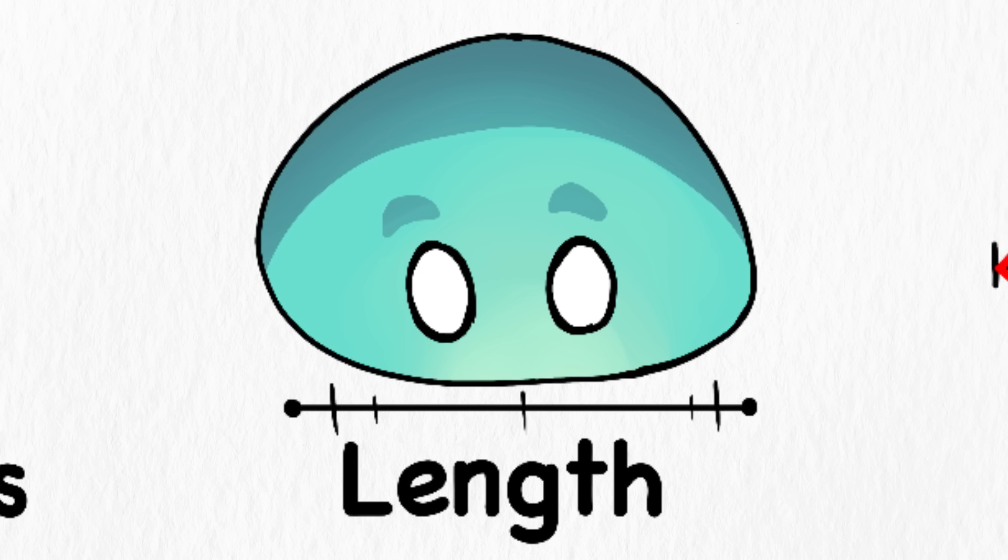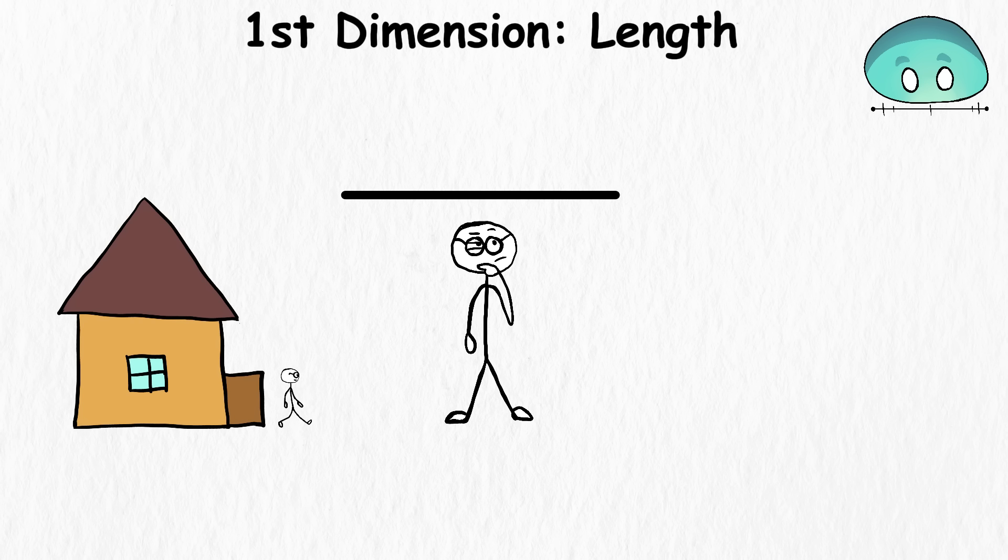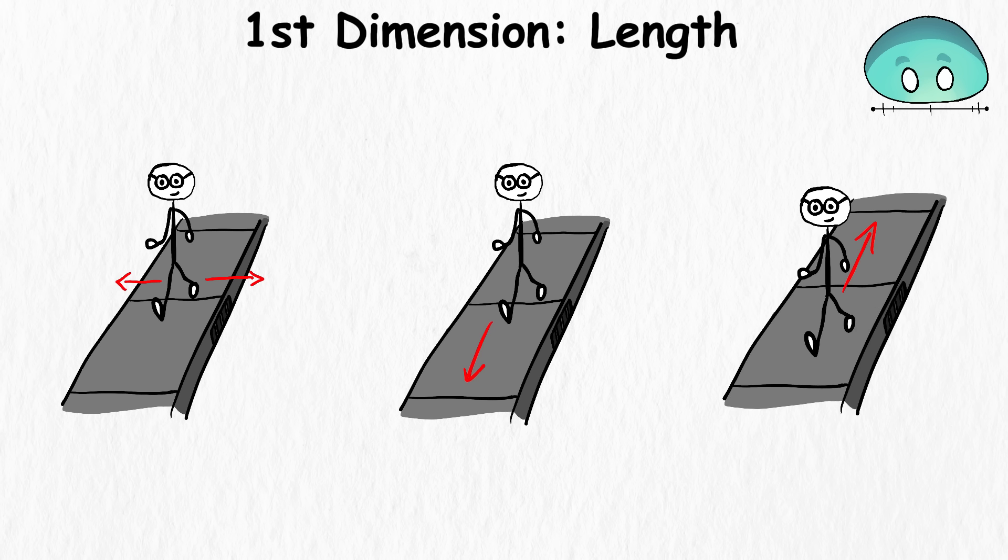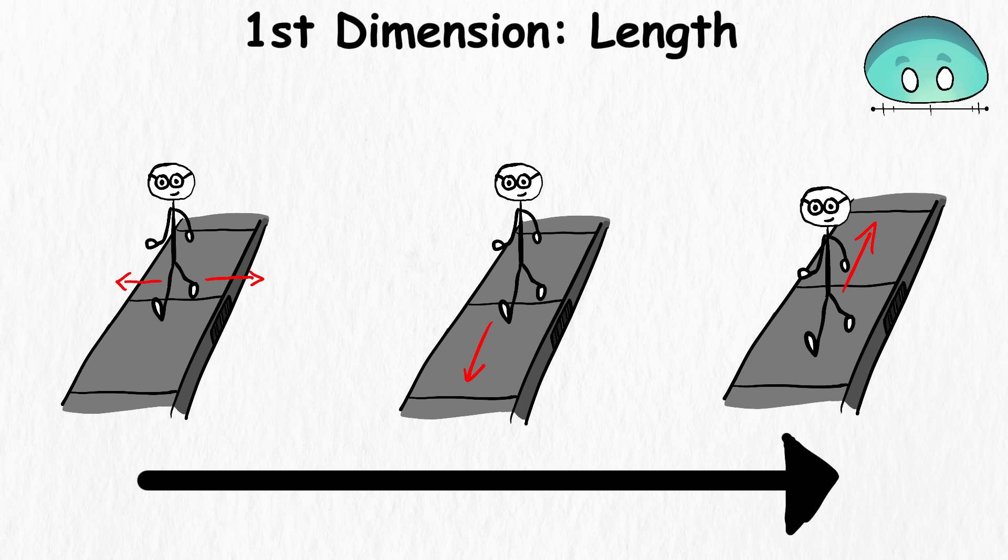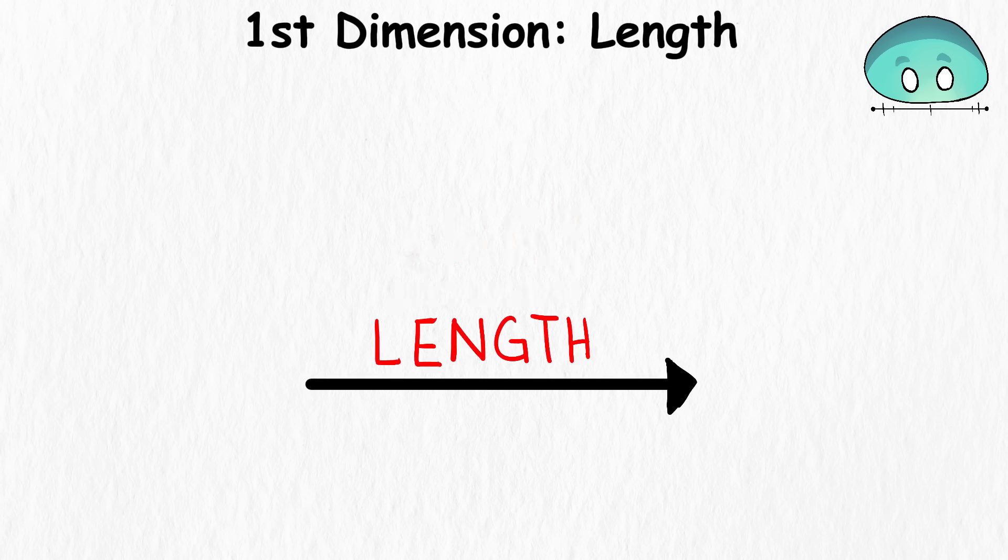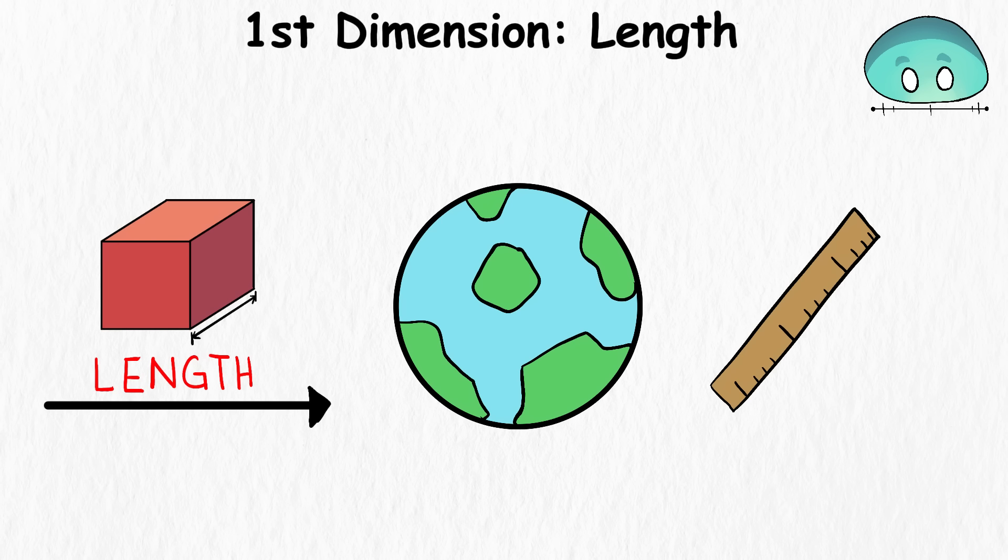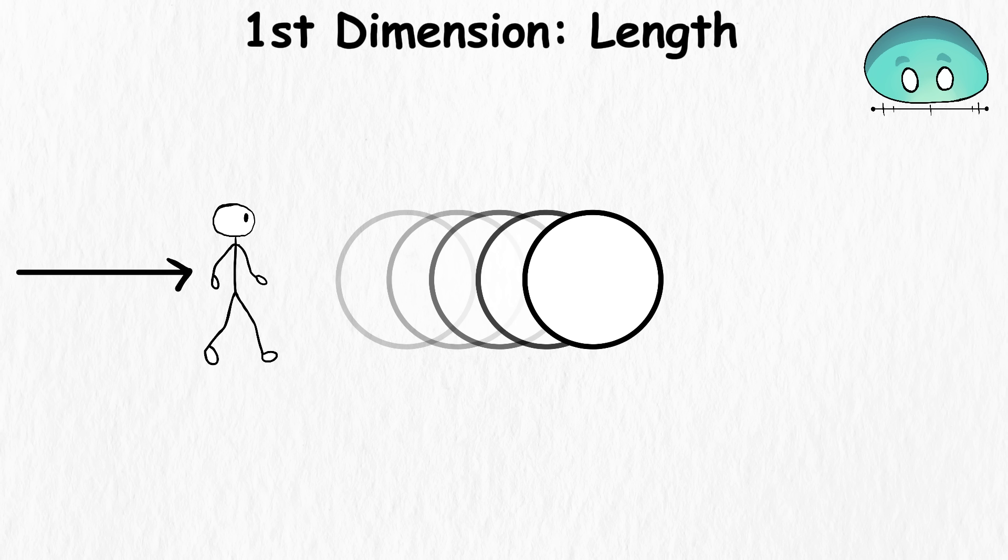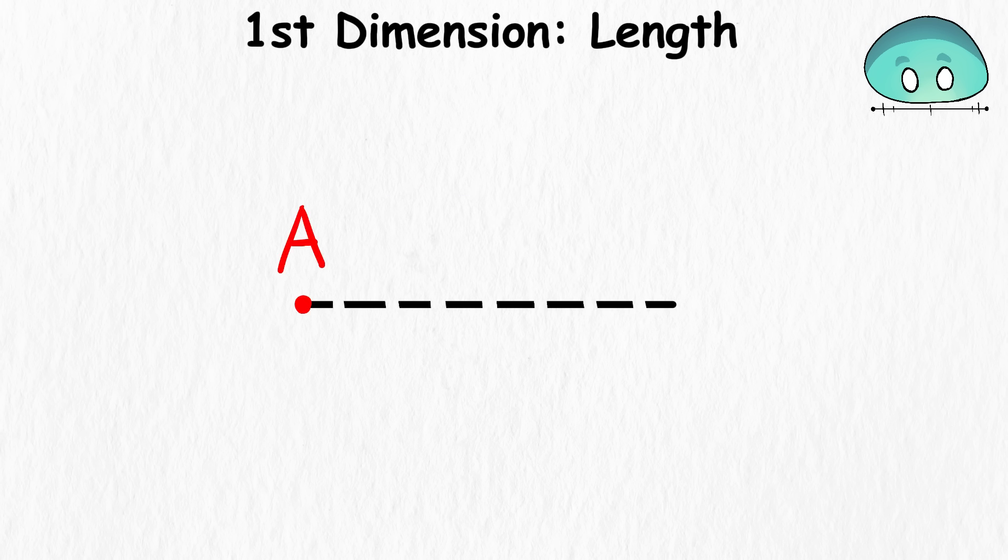First dimension. Length. Step outside your home and imagine a straight line through the sidewalk. Walk through this straight line without stepping sideways. You can only walk forward or backward. This journey represents the concept of the first dimension, which is length. Length is an important aspect of our world because it measures how far something can go in one direction. It only talks about movement along a straight line, like how something exists in an imaginary line from point A to point B.